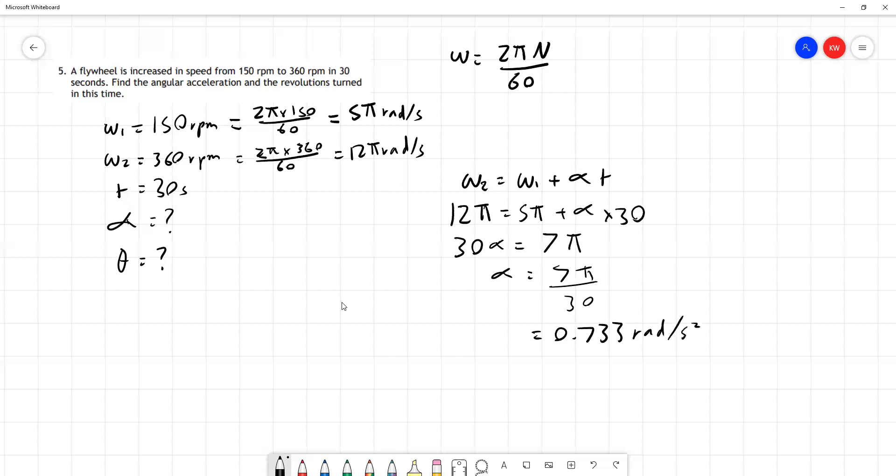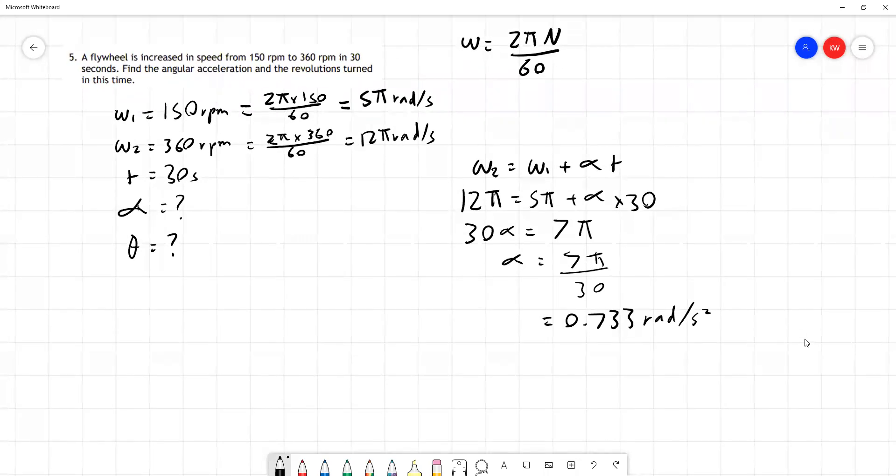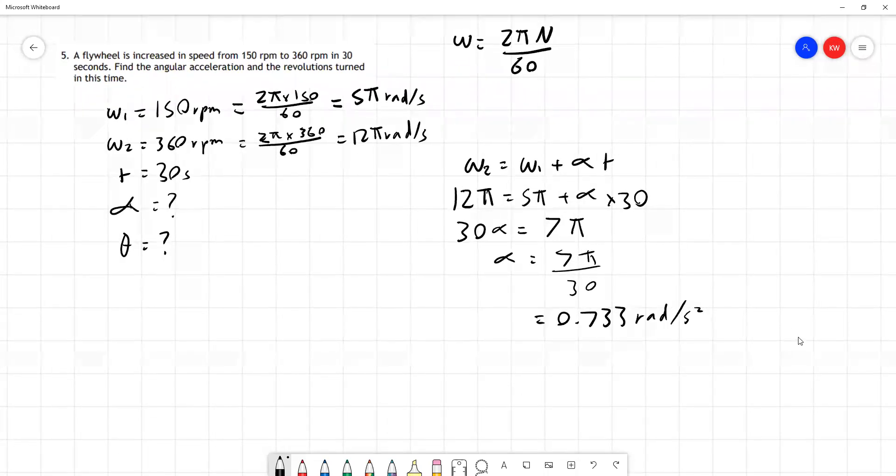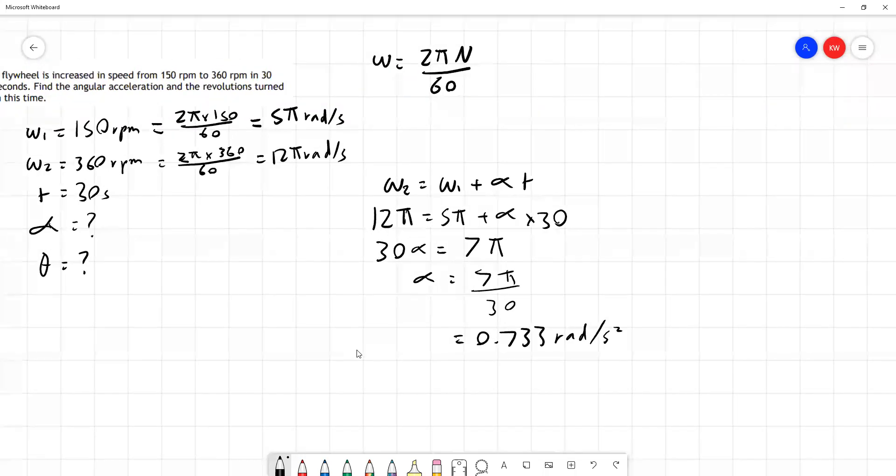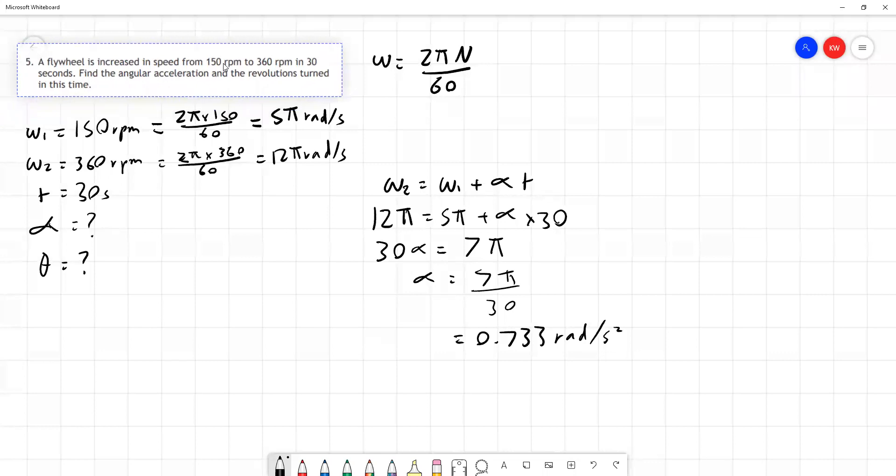That's the first part of this question. The second part we're asked to find the number of revolutions turned in this time. We're working in radians so we're going to get our angular displacement in radians first of all, and then we'll be converting back into revolutions.